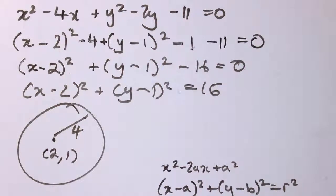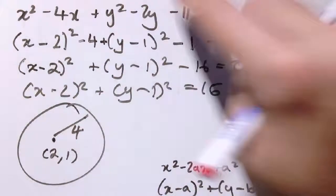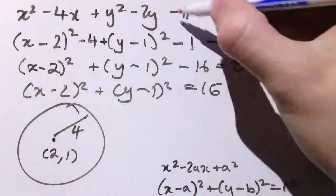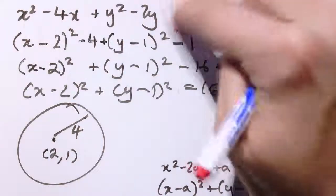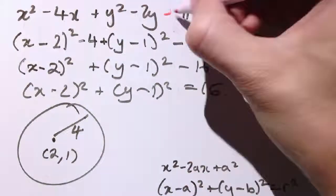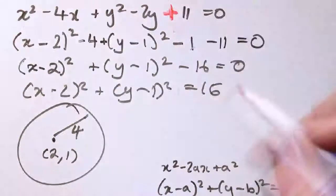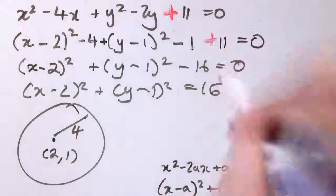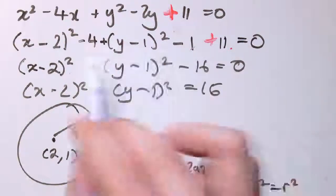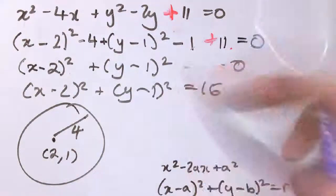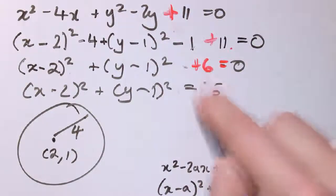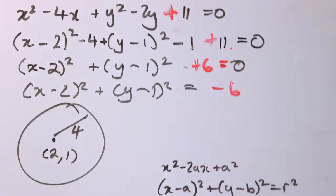Notice if I change the problem slightly so that the minus 11 was instead plus 11, then this wouldn't be a circle anymore. If I had plus 11 here, when I collect all the terms together I'd get 11 minus 1 is 10, minus 4 is 6, so this would be plus 6 equals 0, meaning x minus 2 squared plus y minus 1 squared equals minus 6. So it wouldn't be a circle. When we do this completing the square, at the end we look and see: if the final value is positive, we get a circle; if not, then it wasn't a circle.